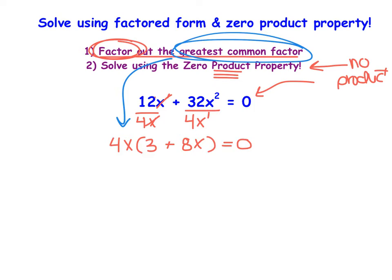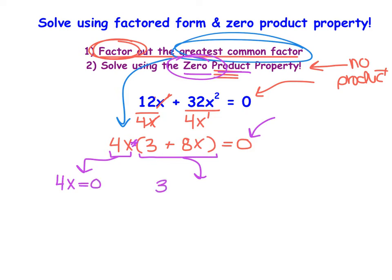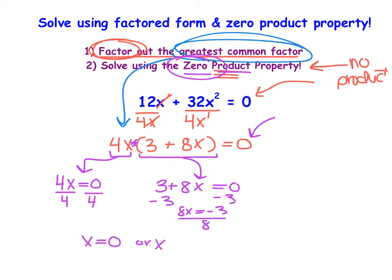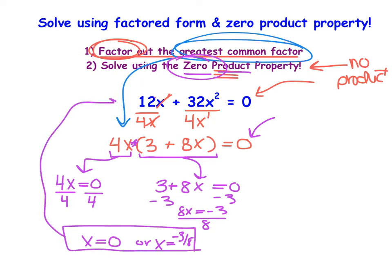From here I notice I now have a product — two things being multiplied that equal 0 — so I can now use the zero product property. One of these two items needs to equal 0. So I take 4x and set that equal to 0, and I take 3 plus 8x and set that equal to 0, then solve each mini equation. Dividing by 4 gives x = 0, or subtracting 3 and dividing by 8 gives x = -3/8. Those are the two values that make the original equation equal 0.